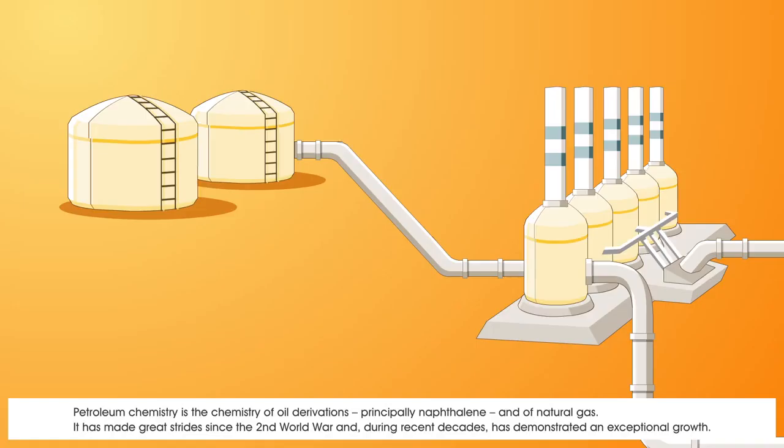Petroleum chemistry is the chemistry of oil derivations, principally naphthalene, and of natural gas. It has made great strides since the Second World War and, during recent decades, has demonstrated an exceptional growth.